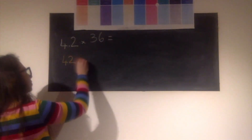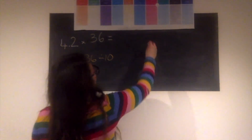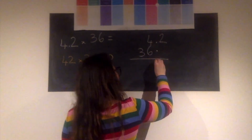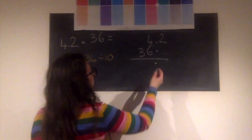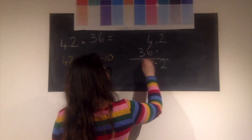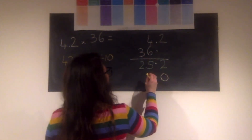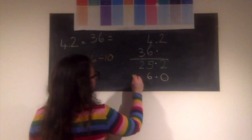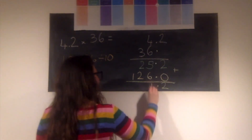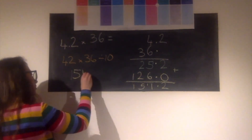For this one, option one was to do 42 times 36 — making it 10 times bigger — then divide the answer by 10. I'm going to model method two, the column decimal method. 6 times two tenths is 12 tenths: put 2 in the tenths column and exchange 1. 6 times 4 is 24, plus the carried 1 is 25. Then multiplying by 30: add the placeholder and decimal point. 30 times two tenths is 6 units; 30 times 4 is 120. Add everything together and the answer for both methods is 151.2.